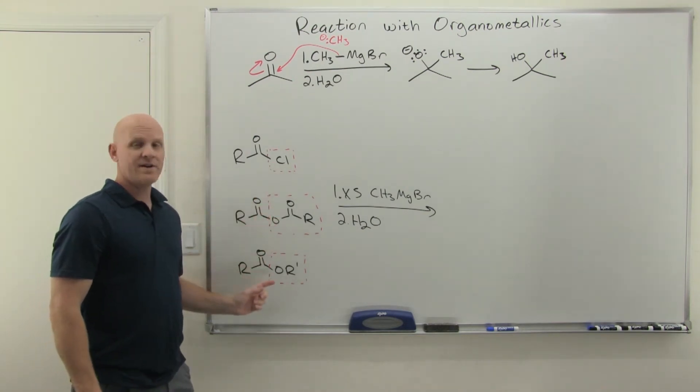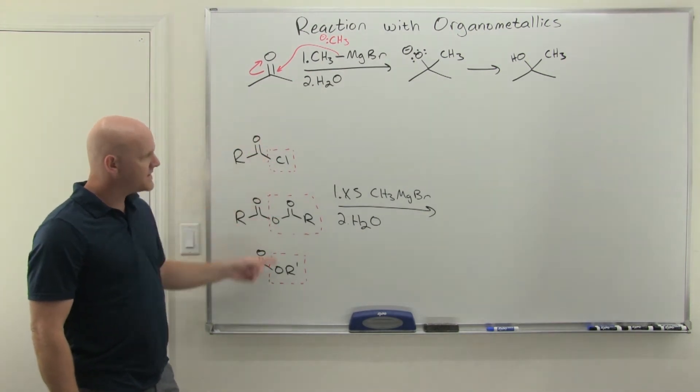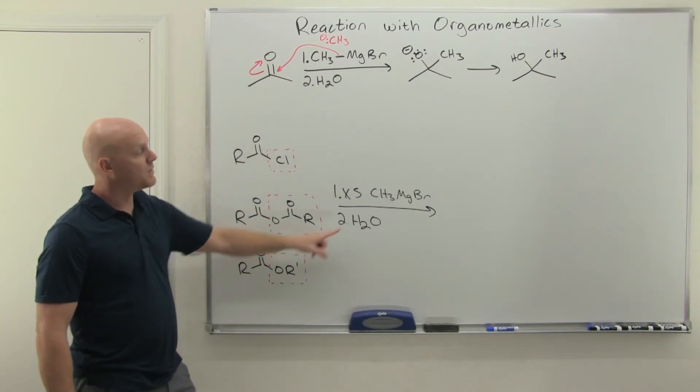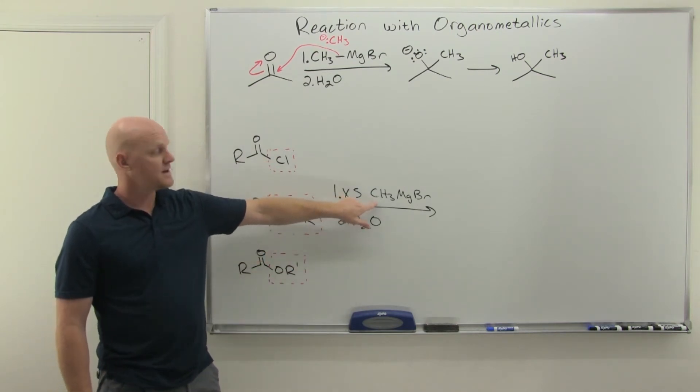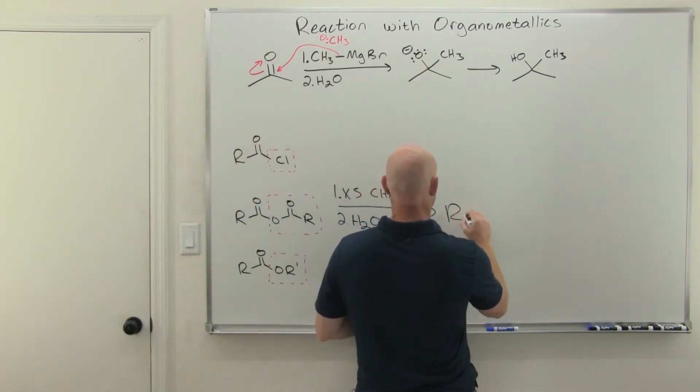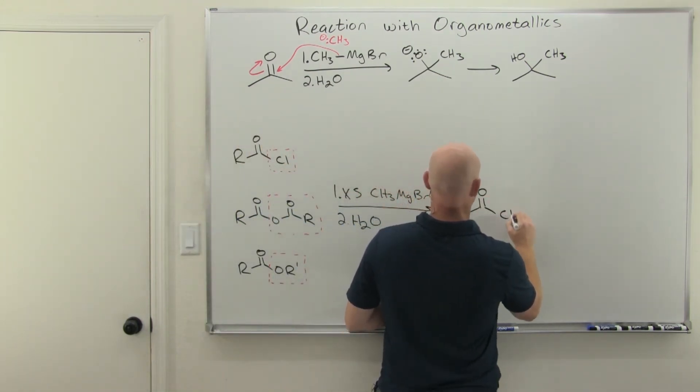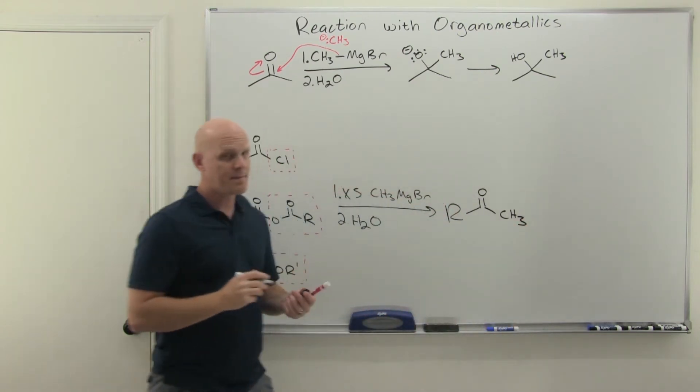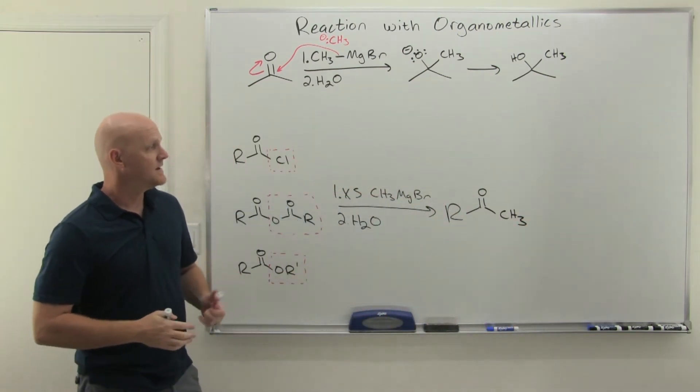And in this case, it doesn't really matter if we use the acid chloride, the anhydride, or the ester. In all three cases, we're just going to replace a different leaving group, but with exactly the same thing, in this case, a methyl group. And so in all three cases, we're now going to have created a methyl ketone in this particular example.